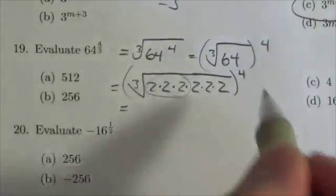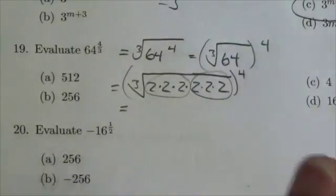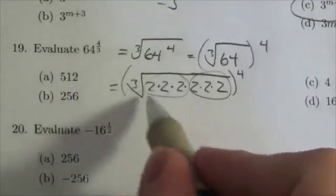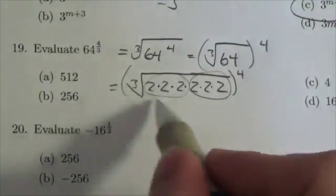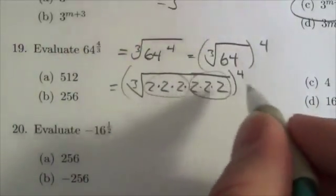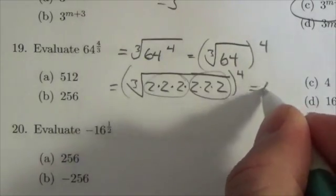With a cube root, I'm looking for triplets - groups of three factors that I can pull a single representative out of. So the cube root of 64 is going to be just 4.